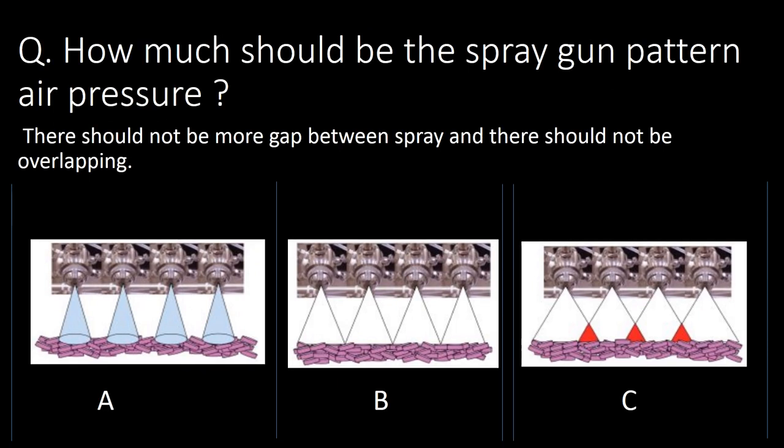What should be the spray gun pattern air pressure? There should not be too much gap between the sprays, and there should not be overlapping. Referring to the three photographs: image A represents more gap between the spray, image C represents the overlapping pattern, and image B represents the ideal spray pattern.